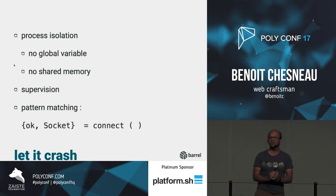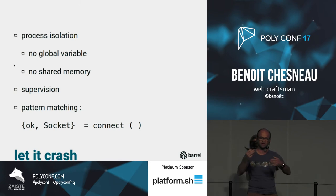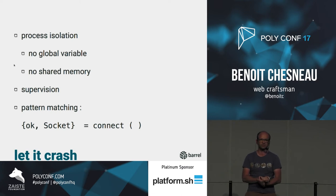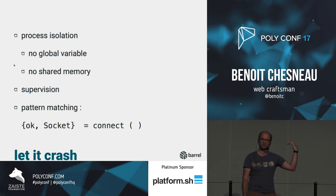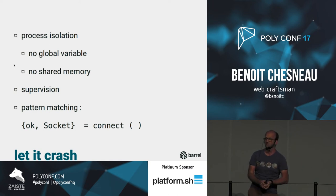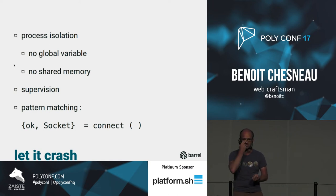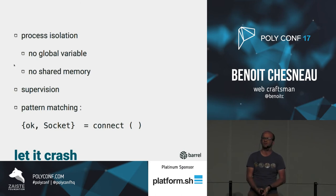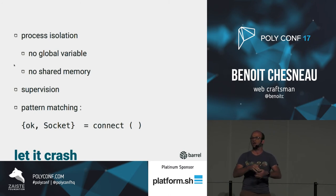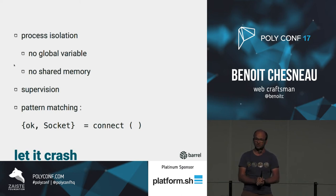For cases where you want some kind of resurrection of your process, you can use supervision. Supervision is about grouping processes and having a strategy for resurrection. You can have temporary processes — if they crash, they crash, no resurrection. You can have transient processes — in bad cases you relaunch them, but on normal exit you don't. Pattern matching is also very useful for resilience, not just for handling responses.